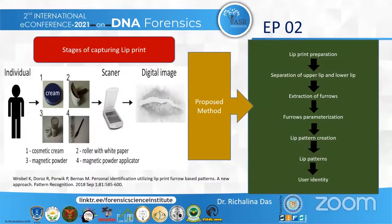Coming to the stages of lip printing: in forensic laboratories, lip prints are transferred with the help of the following steps. First, there is application of moisturizing cream. Then in the second step, white paper is rolled over the lip. Thirdly, magnetic powder and a magnetic powder applicator are used. Forensic analysis focuses on the location and inclination of furrows occurring on a lip print pattern. Finally, the image of the print appearing on the paper is converted into a digital image using a scanner.